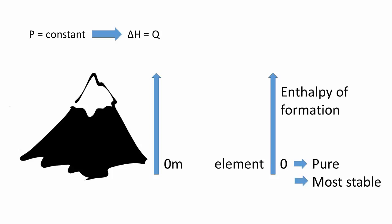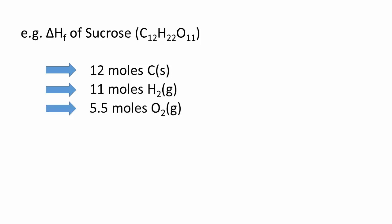For example, the enthalpy of formation of common sugar, sucrose, C12H22O11, is measured relative to 12 moles of graphite, the most stable form of carbon, 11 moles of H2, the most stable form of hydrogen, and 5.5 moles of O2, the most stable form of oxygen.